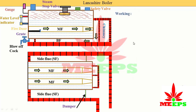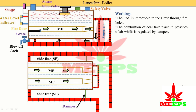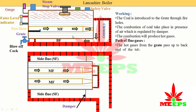Working of the Lancashire boiler: coal is introduced to the grate through the fire door. Combustion of the coal takes place in the presence of air — air supply is regulated by a damper. The combustion produces hot gases, which pass through different components as flue gases. The flue gas first enters the main flow and passes from the grate to the back end of the fire tubes.